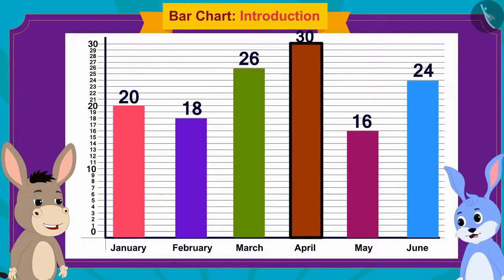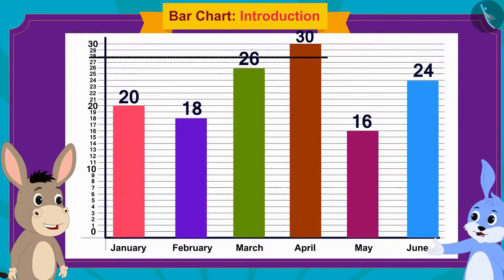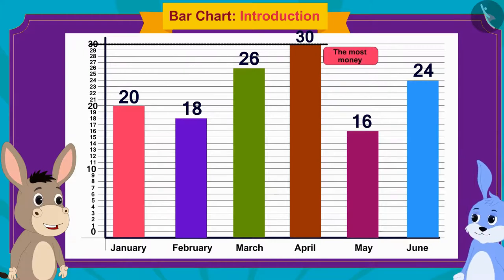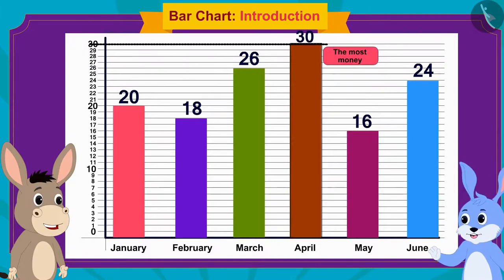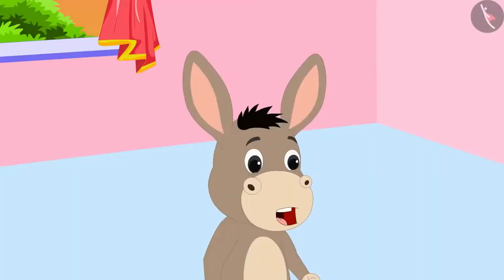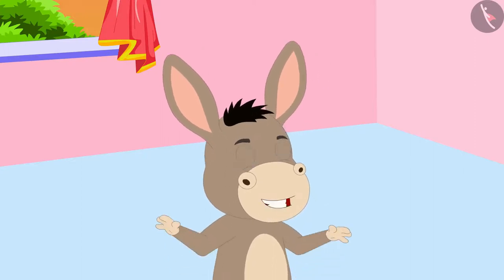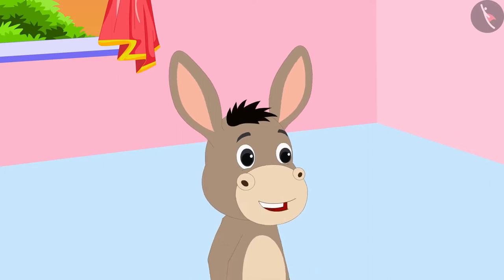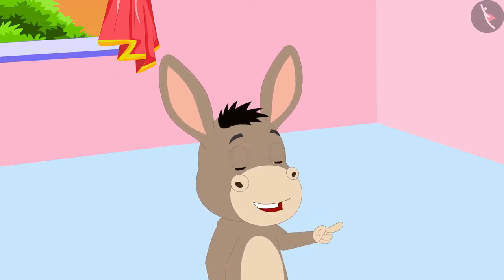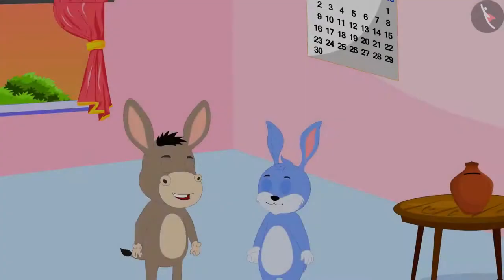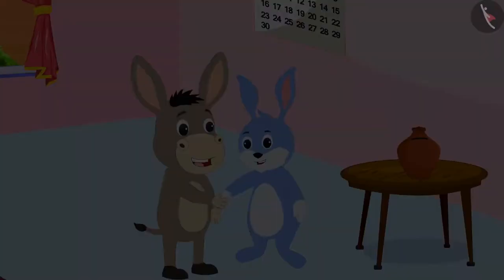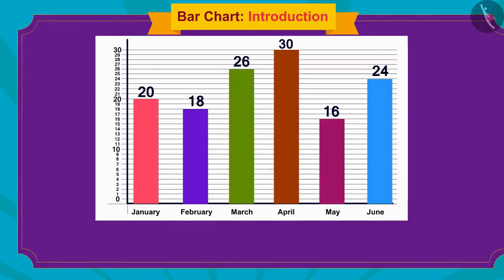Bunny also noticed that April has the longest rectangle, meaning he saved the most money — 30 rupees — in the month of April. Bholla praised Bunny for learning quickly and encouraged him to continue saving money throughout the year. Bunny promised to keep saving. The video concluded by summarizing that they had learned about bar charts, with more to come in the next video through interesting examples.